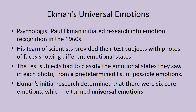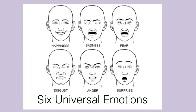Psychologist Paul Ekman initiated research into emotion recognition in the 1960s. His team provided test subjects with photos of faces showing different emotional states, and subjects had to classify the emotional states from a predetermined list. Ekman's initial research determined there were six core universal emotions: happiness, sadness, fear, disgust, anger, and surprise. By 'universal,' he meant it didn't matter if you were in the United States, Japan, Russia, China, Madagascar, or Australia — if you showed pictures of these faces to people, they knew what they meant.